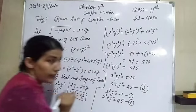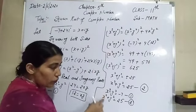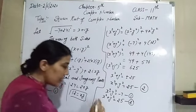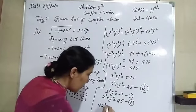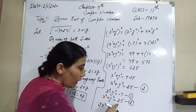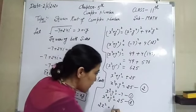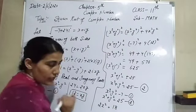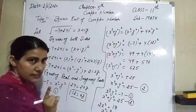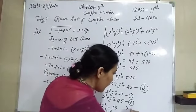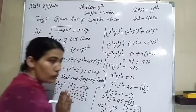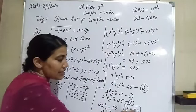Adding equations 1 and 2: x² minus y² plus x² plus y² equals minus 7 plus 25. The y² terms cancel, giving 2x² equals 18, so x² equals 9 and x equals plus or minus 3.